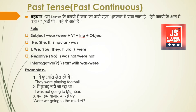The answer is: 'I was not going to Mumbai.' If we remove the word 'नहीं' (not), the sentence would be 'I was going to Mumbai.' But because this is a negative sentence with 'नहीं', 'not' is added after 'was', and 'ing' is added to the verb 'go' according to the rules. So the complete sentence is: 'I was not going to Mumbai.'